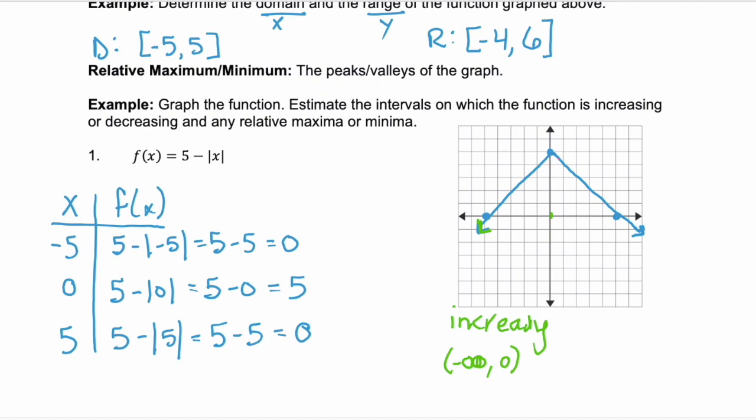And then the right side of the graph is decreasing. And it's decreasing from 0 through positive infinity, because this end of the graph is continuing on. And then we can identify that we have this relative maxima, right? It's a maximum point, or a peak. So we have a relative maxima of 5 at x equals 0.